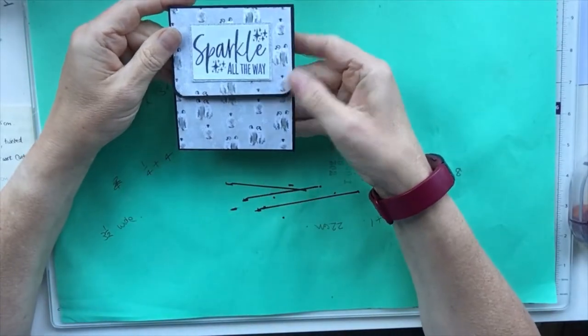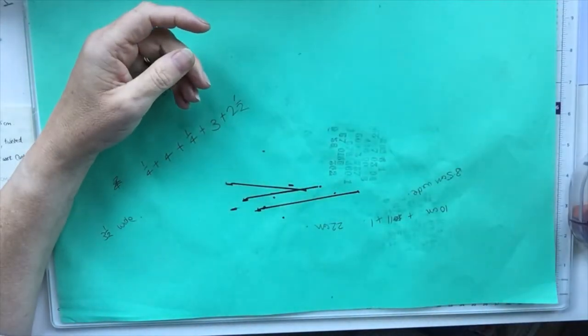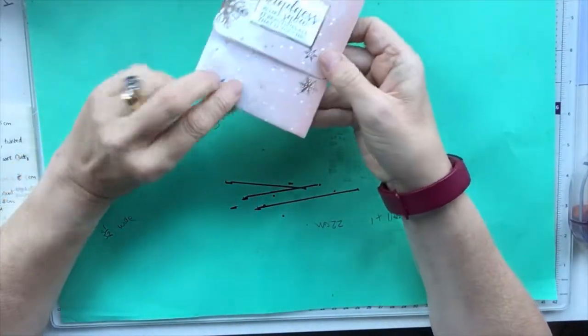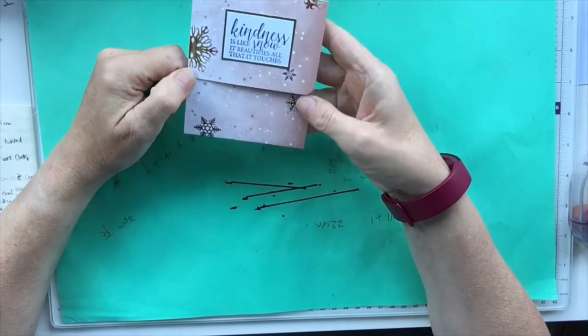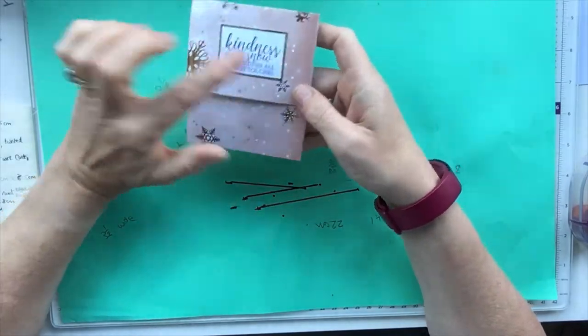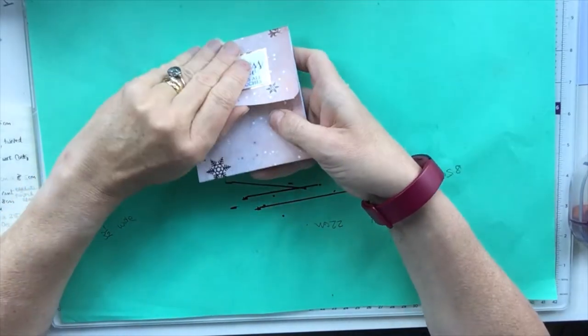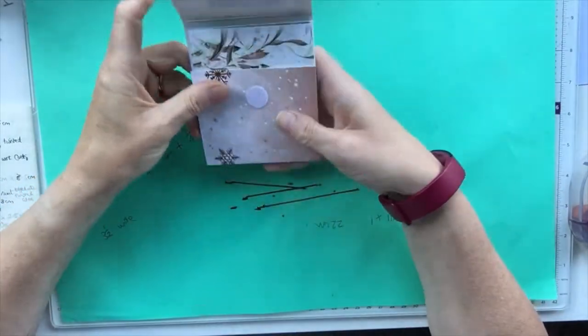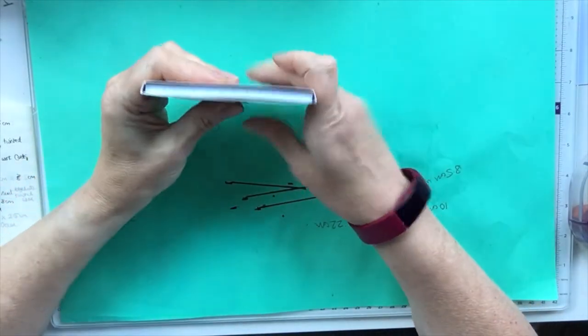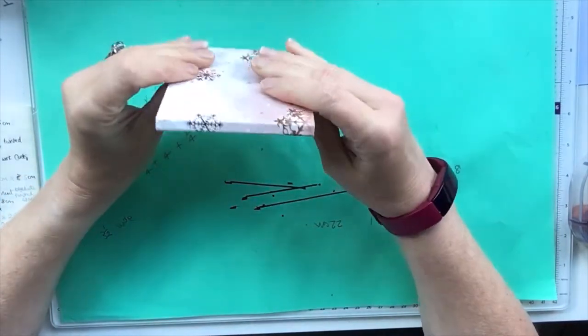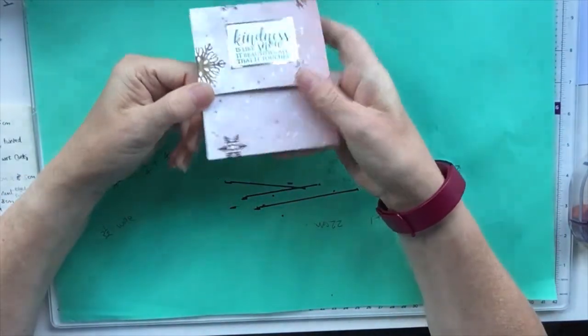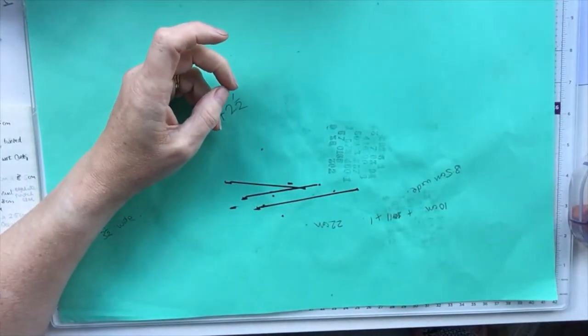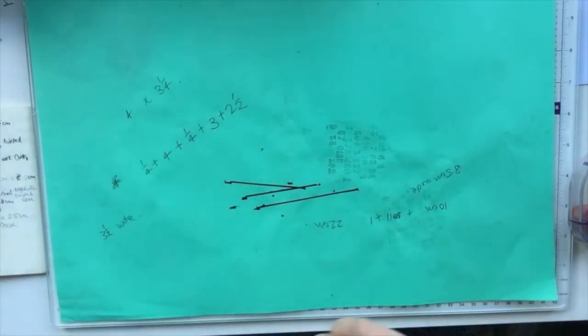Just to remind you, this is what we made yesterday, and I have had another play today actually just to show you that you can make it out of pre-patterned paper. So I've used Hunkydory Adorable Scorable with just a little sentiment on the front and just covered the inside. That took me no more than five minutes because I knew what I was doing, so really once you know what you're doing you can make those very quickly.